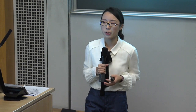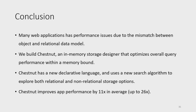To conclude: many web applications have performance issues due to the mismatch between object and relational data models. We built Chestnut, an in-memory storage designer with a new declarative language and a new search algorithm exploring both relational and non-relational storage options. Chestnut is able to significantly improve query performance. Thanks.